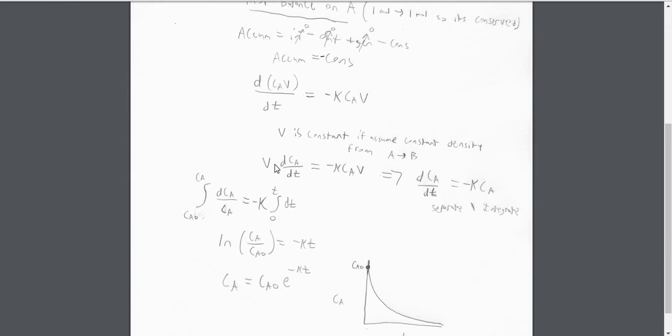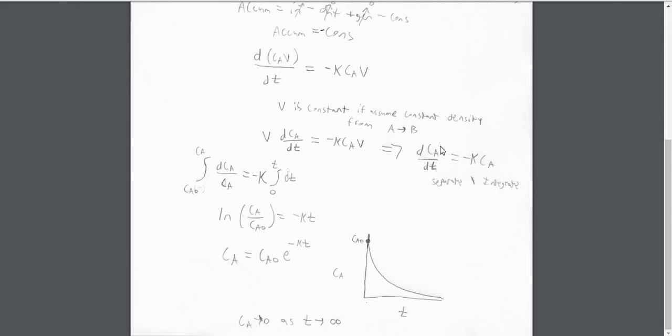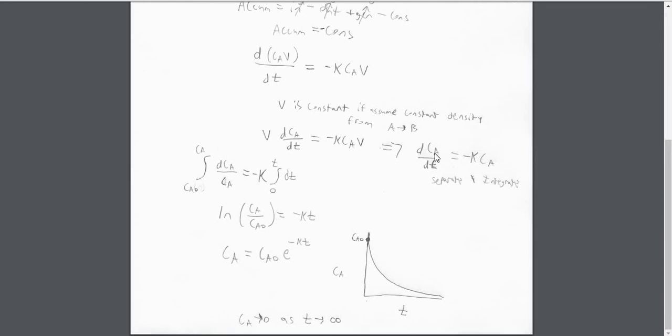And that means we can move this V outside and cancel it. So the derivative of the concentration of A with respect to time is equal to negative K times Ca.